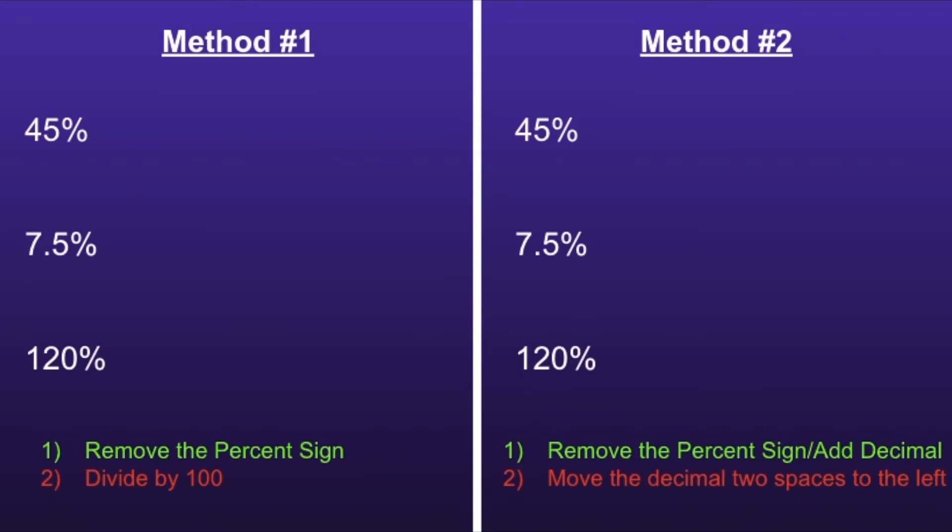Method number 1. Step 1 is to remove the percent sign. Step 2 is to divide by 100.